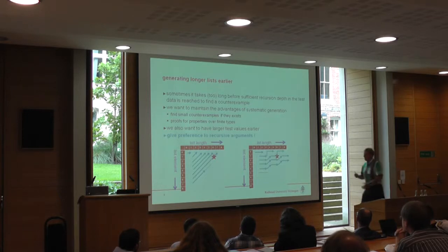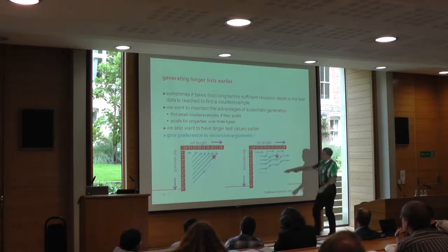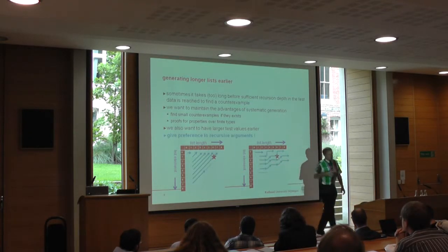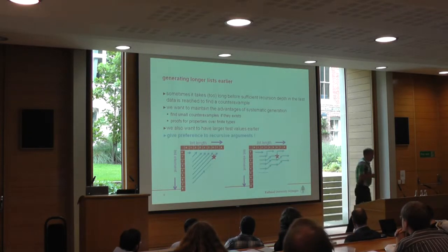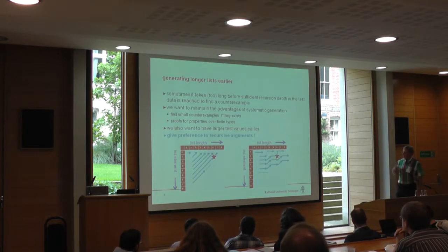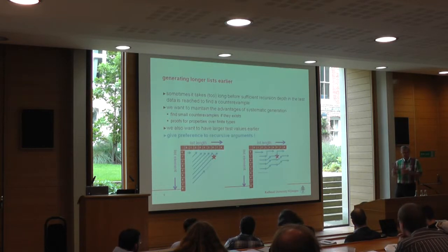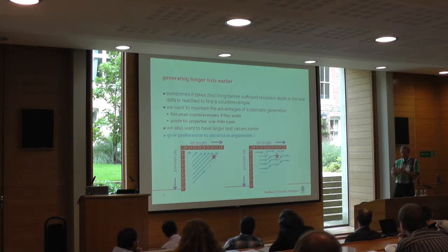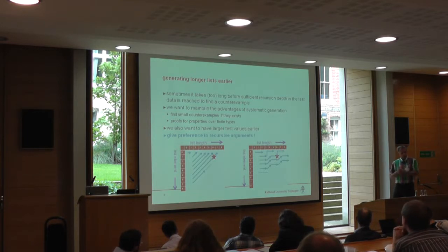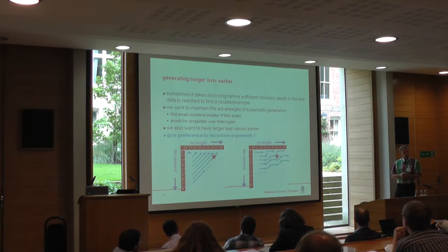The price to be paid is that I have less variation in the values of the list, but for most functions the values are not that interesting. I need some equal things and some non-equal things, but two and three are usually as good as four and five, so there's not much reason to try all those.